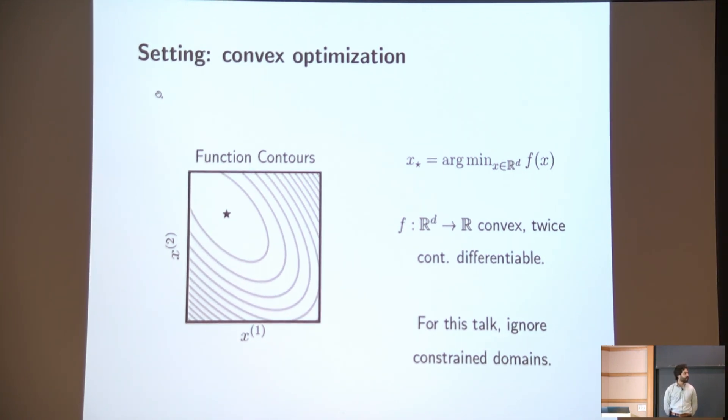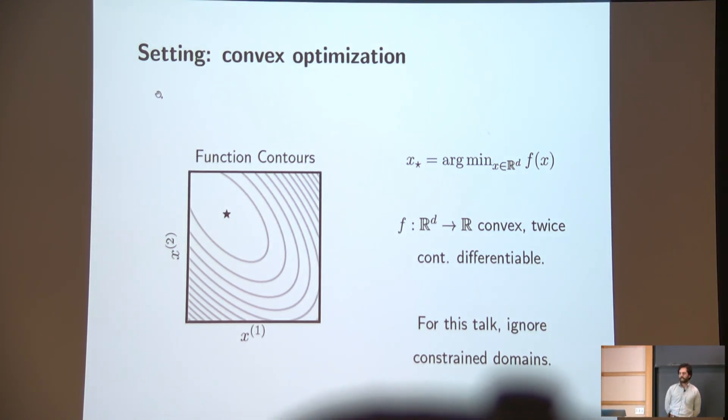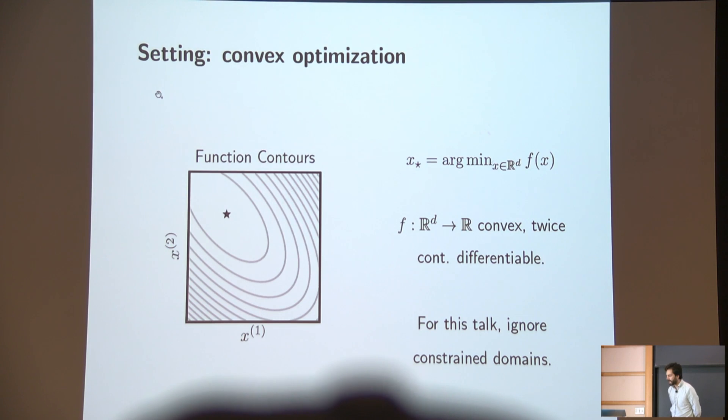We're going to assume for this talk that f is convex and twice continuously differentiable. And we're going to glaze over a lot of the technical details. In particular, I'm not going to talk much in the exposition about the issue of constrained domains. So the picture I want you really to keep in mind is the picture on the left, which is a function of two dimensions plotted as the contour lines of the surface or the sublevel sets. Actually just a quadratic. And the goal in this problem is starting anywhere in space to find the little star.